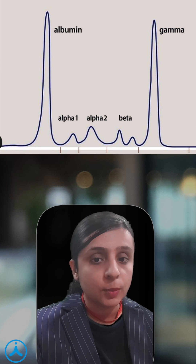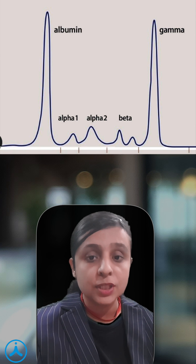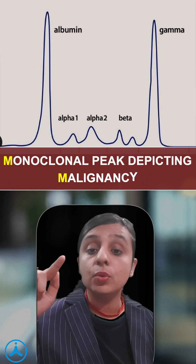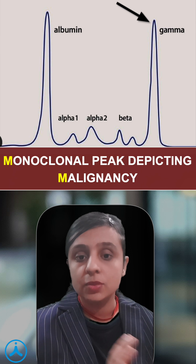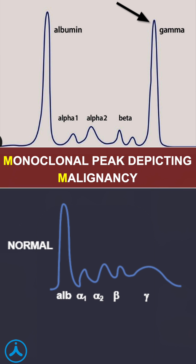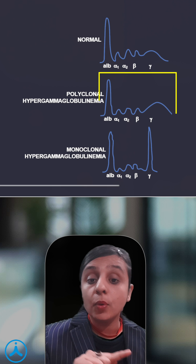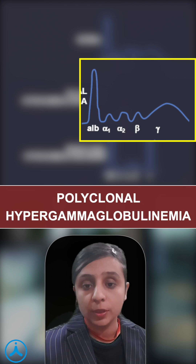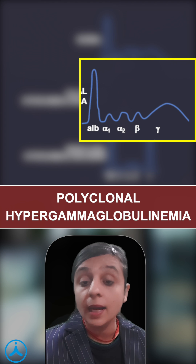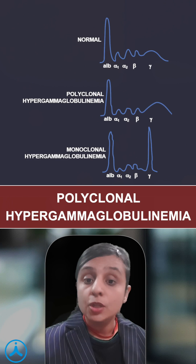Lastly, we can see serum immunoelectrophoresis showing a monoclonal peak in the gamma region. Comparing to normal, here you can see a monoclonal peak depicting malignancy — M for monoclonal, M for malignancy — unlike a polyclonal hypergammaglobulinemia which depicts underlying reactive conditions.